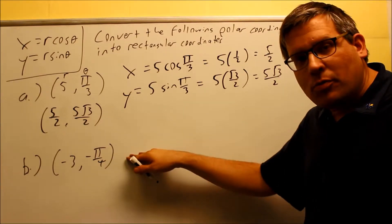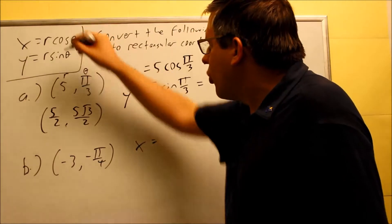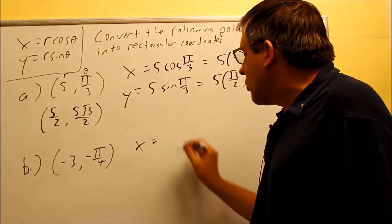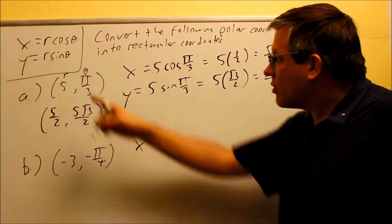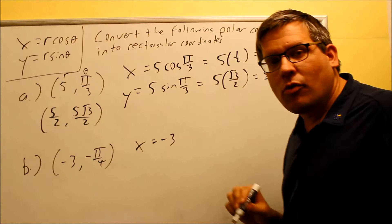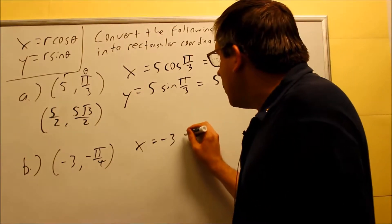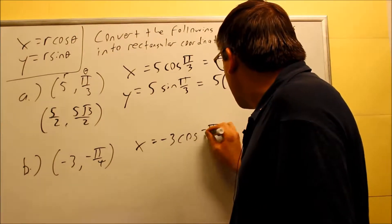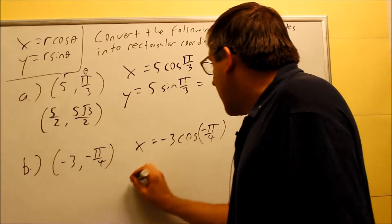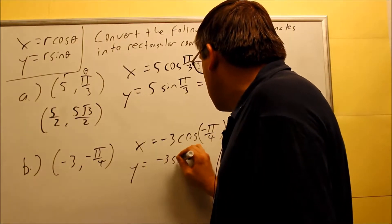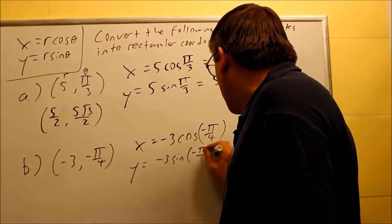Now let's do part B. Same thing — we're going to use the same two formulas. X is equal to negative 3 cosine of negative pi over 4, and then y equals negative 3 sine of negative pi over 4. If the r is negative, it's okay — you can still use the same formula.